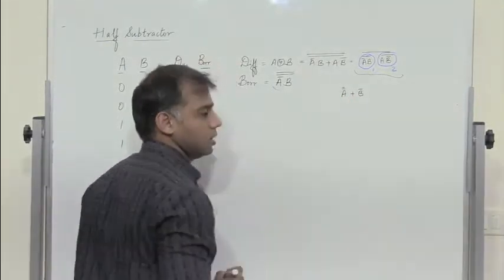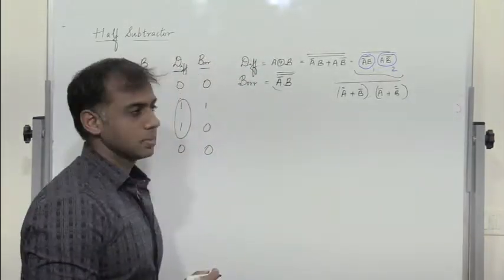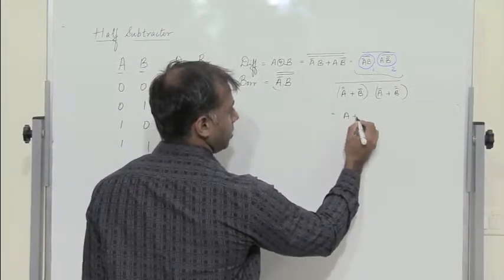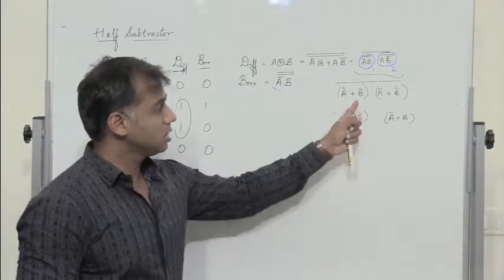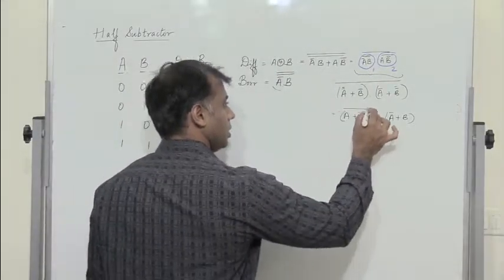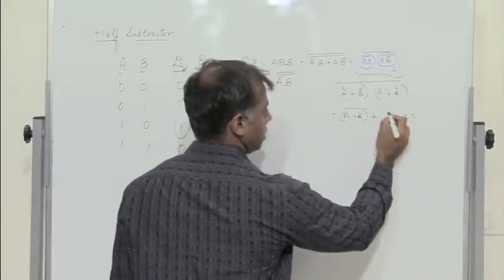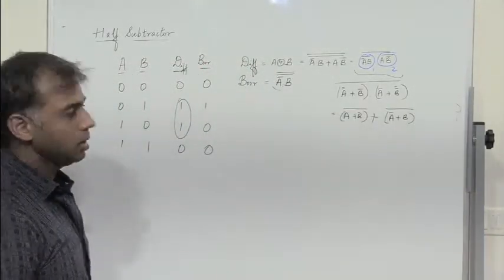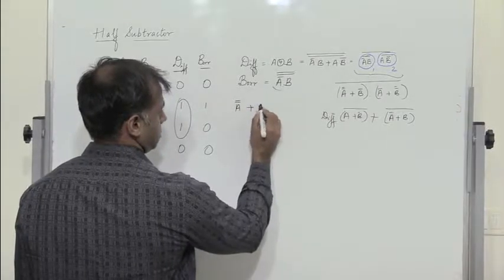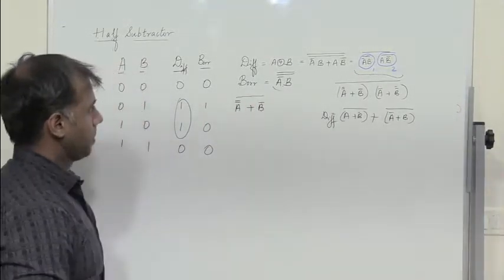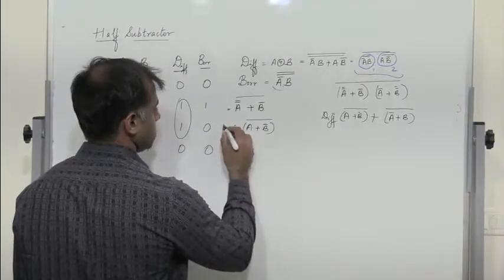Continuing De Morgan's: this gives A + B̅, times A̅ + B, all complemented. Applying De Morgan's theorem again, this is term1 · term2 all complemented, which equals term1 complement plus term2 complement. So difference = (A + B̅)' plus (A̅ + B)'. For borrow: A̅B double complemented gives A + B̅ all complemented. So borrow = (A + B̅)'.